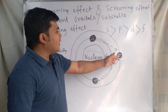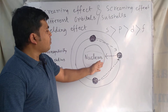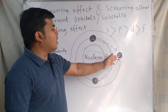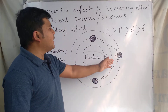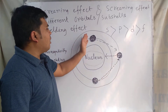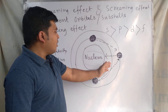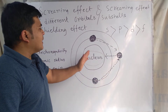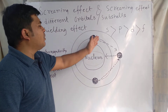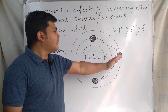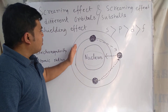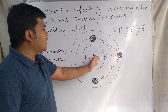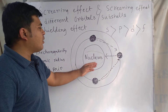What happens is: the nucleus attracts the electron towards itself, and the electrons present in inner shells repel the outermost electron or electrons present in the outermost shell. As a result, due to the presence of electrons in the shells between the nucleus and the outermost shells or orbitals, those inner shells or orbitals decrease the force of attraction between the nucleus and the outermost electrons.